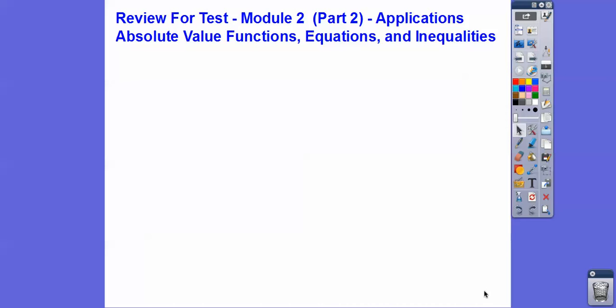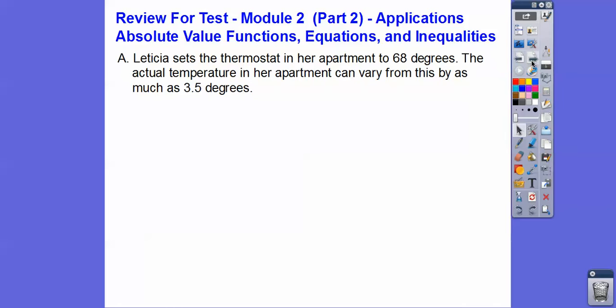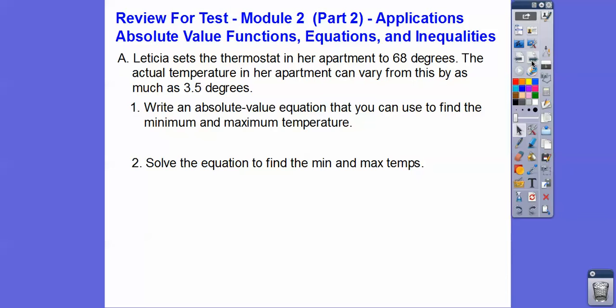All right, you guys. This is the second part of the review for the test. This is the application problem, so let's go ahead and get started with the first one. Leticia sets the thermostat in her apartment to 68 degrees. The actual temperature in her apartment can vary from this by as much as 3.5 degrees. So a couple of questions here. We're going to write an absolute value equation that you can use to find the minimum and the maximum temperature, and then we'll solve the equation to find those minimum and maximum temperatures.